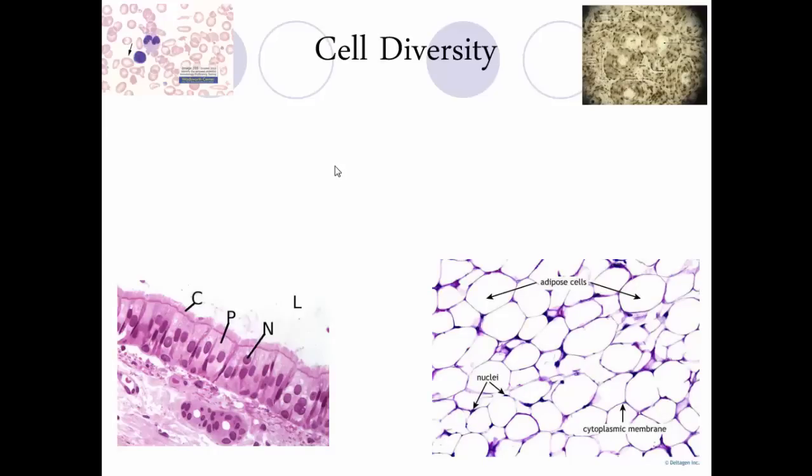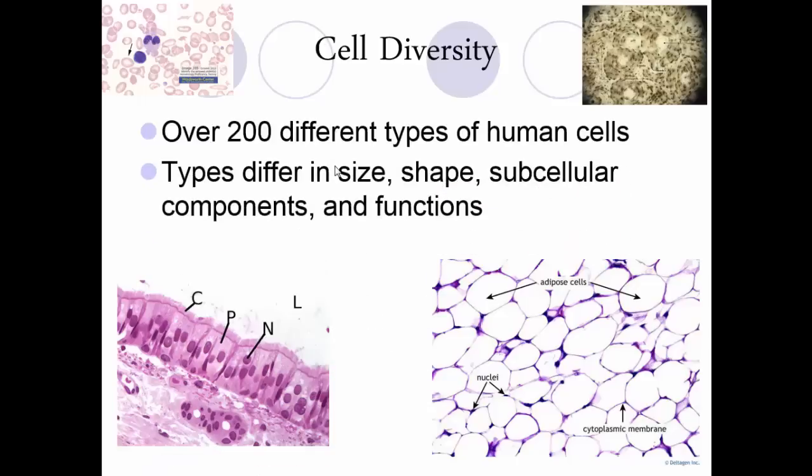Cells are very diverse and very specialized. In humans, there are over 200 different types of cells, and each cell has a specific shape, specific subcellular components also known as organelles, and certain functions based on its shape and subcellular components. As you can see, these cells look drastically different. The top left shows blood cells — the more purple ones are white blood cells, the pinkish ones are red blood cells.